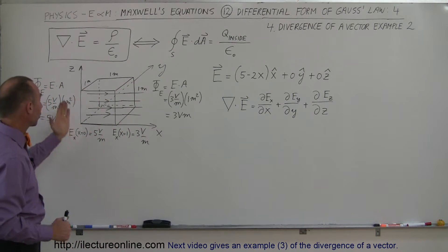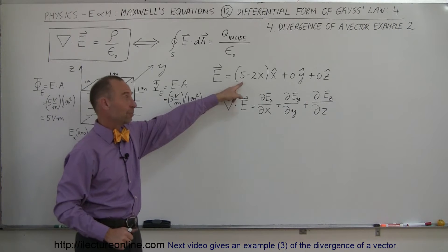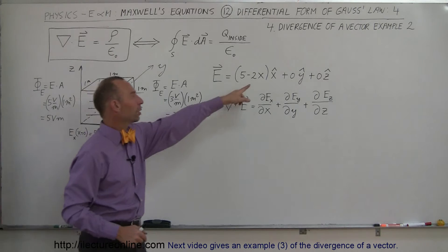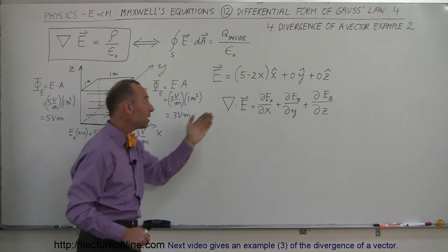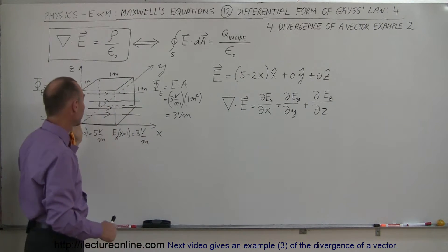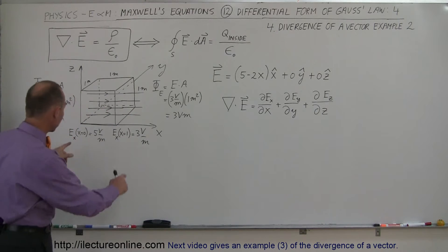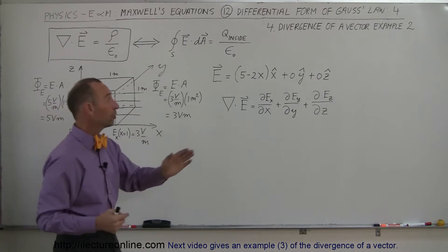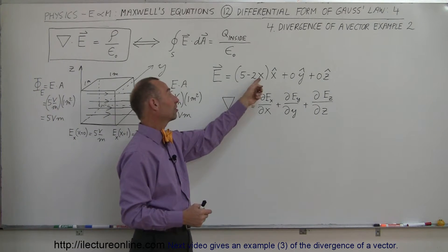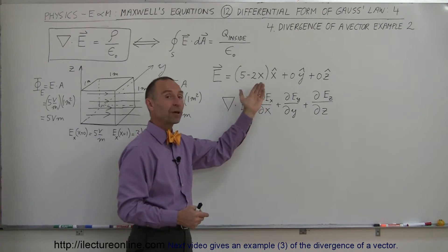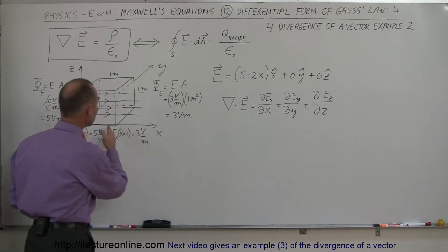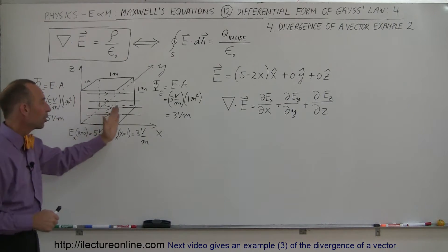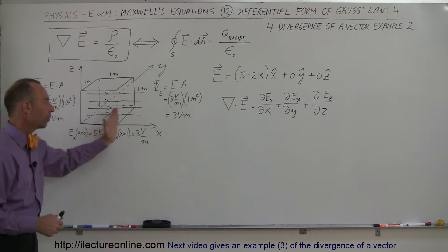At the origin, the electric field has a strength of 5 volts per meter. If we travel 1 meter to the right and plug in 1 for X, 5 minus 2 gives us 3, so the strength of the field at 1 meter away from the origin to the right will be 3 volts per meter. If we travel another meter to the right, X equals 2, 5 minus 2 times 2 is 1, so at 2 meters away from the origin the field would be 1 volt per meter. You can see the field is getting weaker and weaker in a linear sense as you go from the origin out to the right.